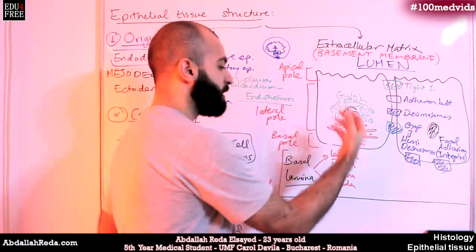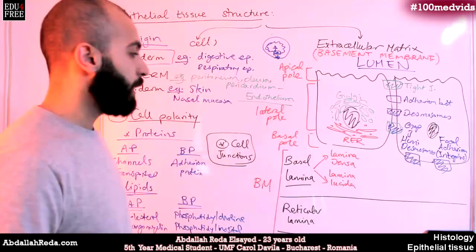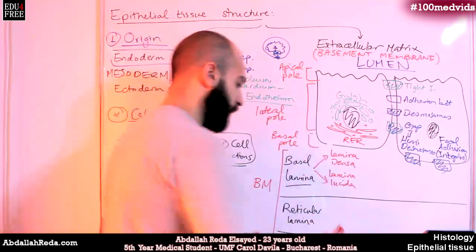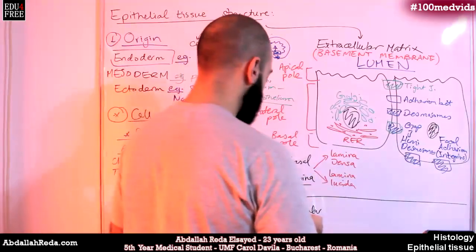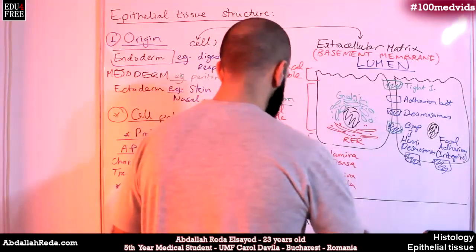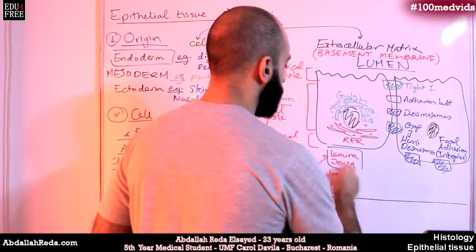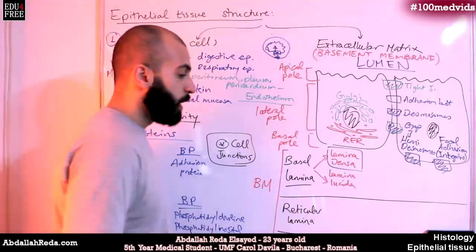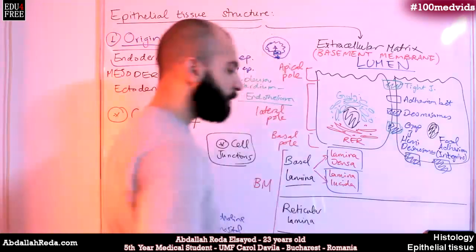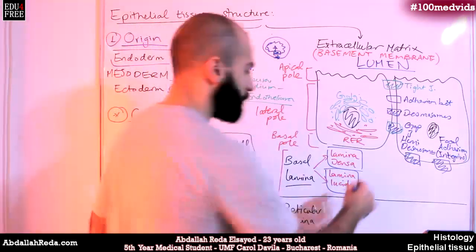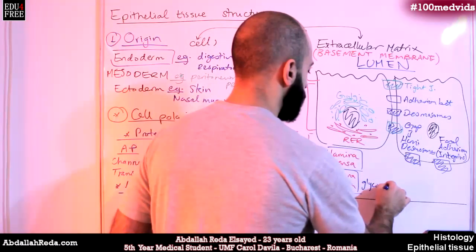Why is one of them dense and the other appears lighter under the electron microscope? It's because of their structure. The lamina densa mainly contains fibers, and lamina lucida contains glycoproteins.